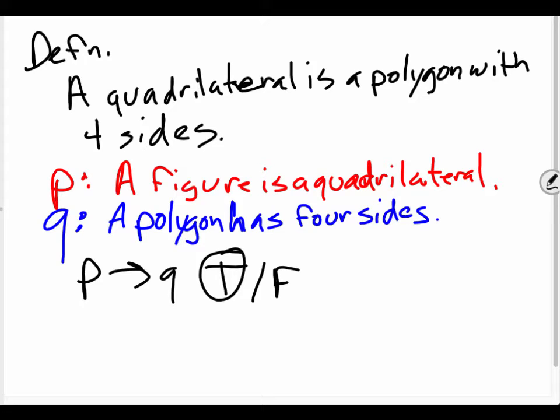Now we need to check the converse, which is Q implies P. Right? And we need to see if that's true or false. So now the converse would be if a polygon has four sides, then it is a quadrilateral. Show of hands if you think that statement is true. Raise your hand. What if you think that statement is false? Raise your hand.